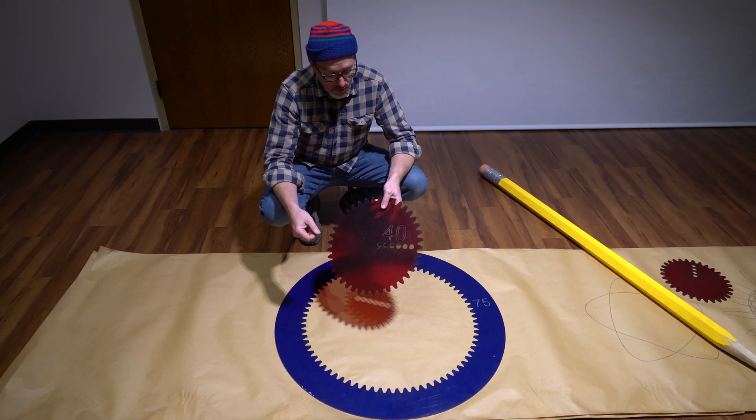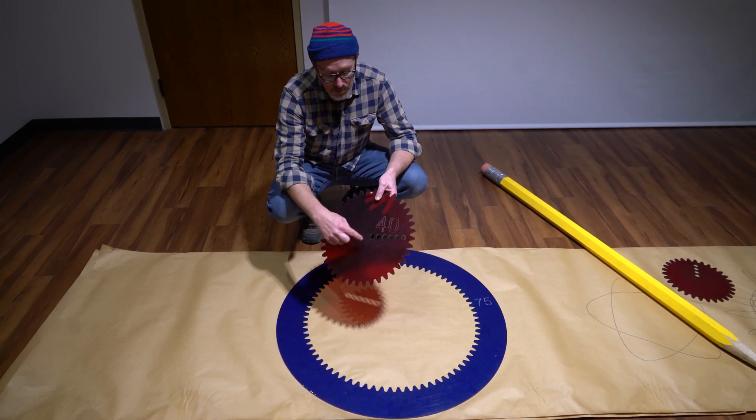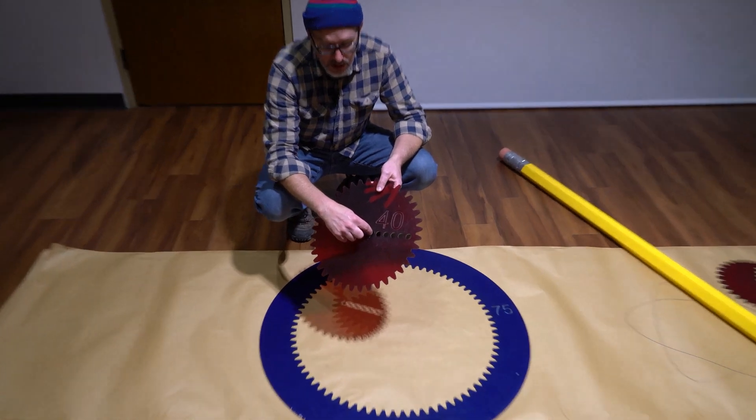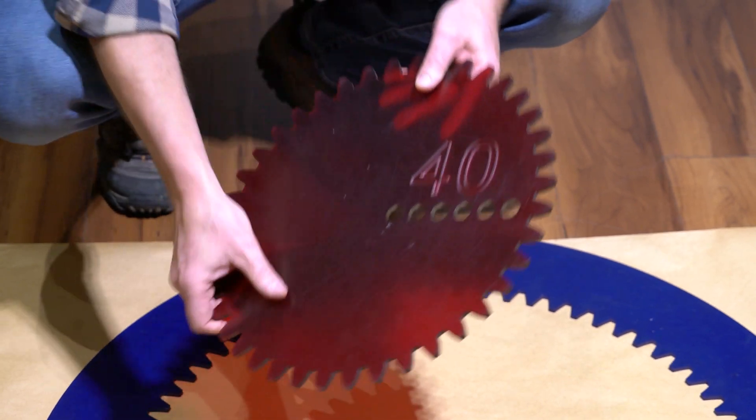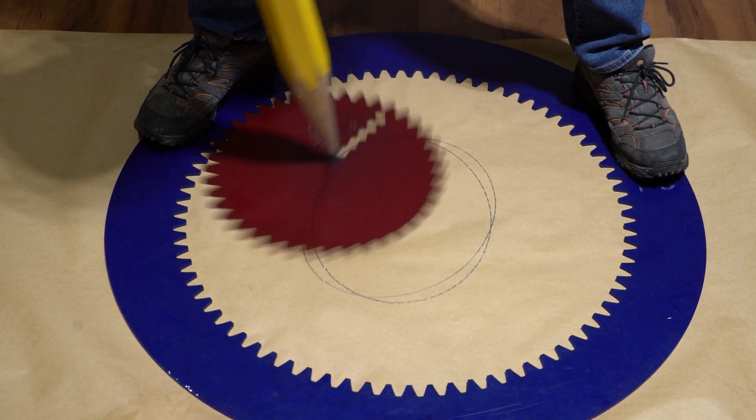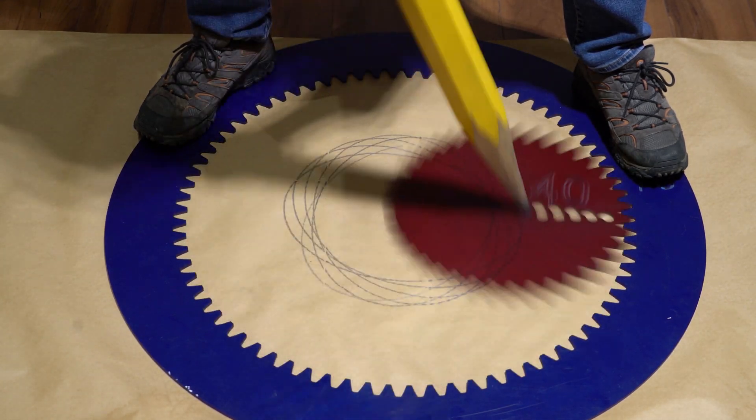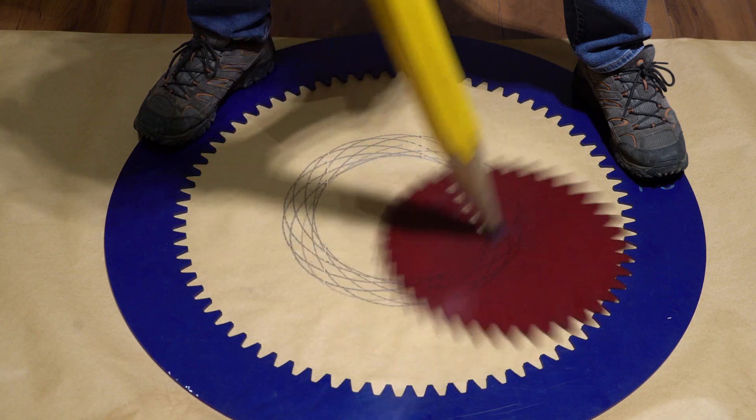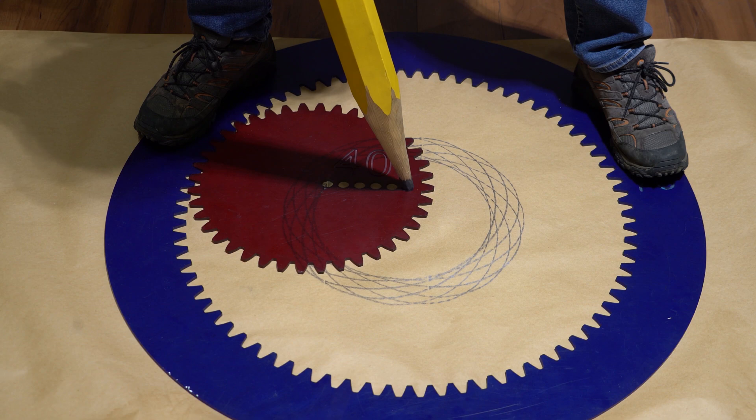This time we're going to make a hypotrochoid that has two designs, one made with an inner hole in the wheel and one made with the outer hole in the wheel to see how those two look. Okay, there's the inner part, and now we're going to do the outer.